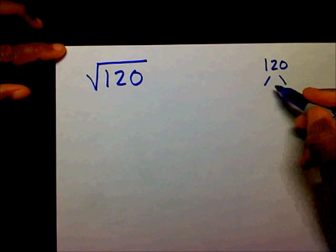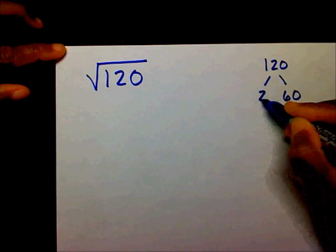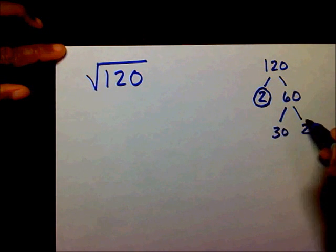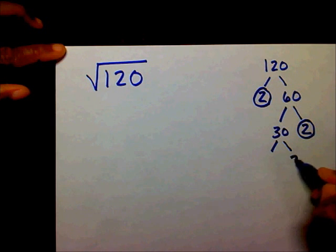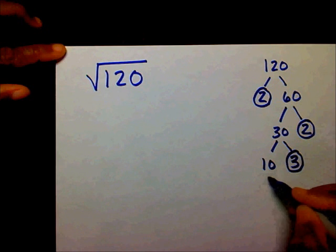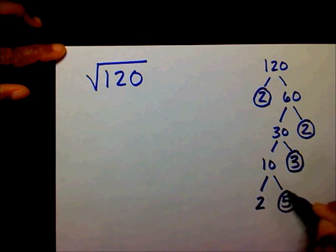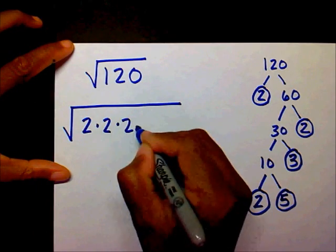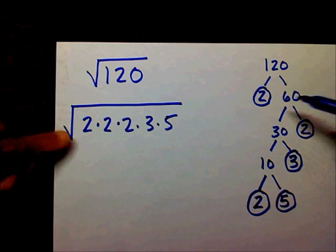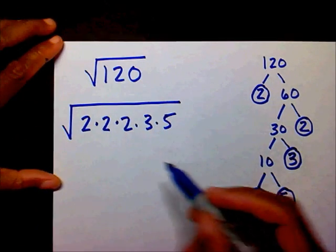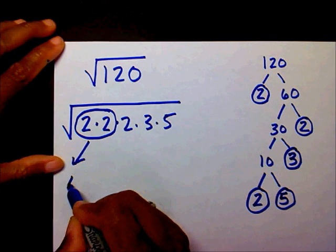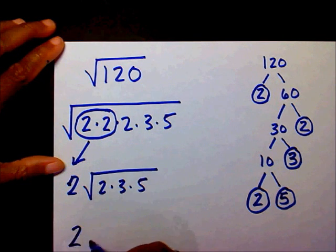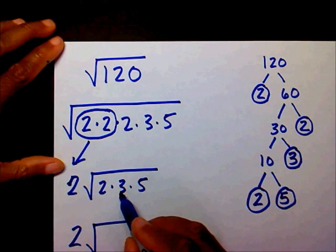I have 120 — I want to break this one down. That gives me 2 and 60 because 2 times 60 is 120. 2 is prime. I can break 60 into 2 and 30 — 2 is prime. I can break 30 into 3 and 10 — 3 is prime. I can break 10 into 2 and 5, both prime. So underneath my radical I have 2 times 2 times 2 times 3 times 5. There's a perfect square — the pair of 2's goes outside. Inside I'm left with 2 times 3 times 5. So my final answer is 2 radical 30, since 2 times 3 is 6 and 6 times 5 is 30.